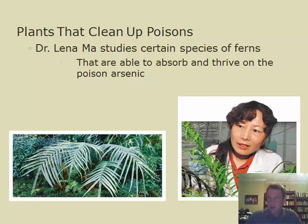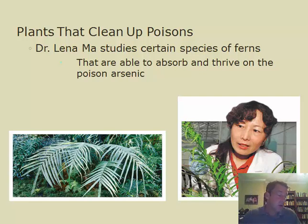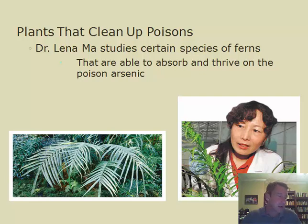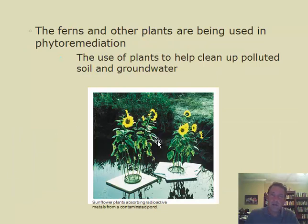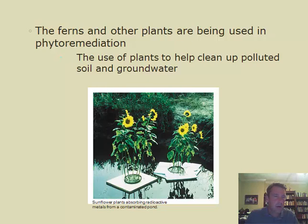The arsenic gets incorporated into the plant's tissues and then the plants can be disposed of properly. These ferns are an example. This process is called bioremediation — or specifically phytoremediation when plants are used. Biologists also use bacteria to clean up oil spills. Here's another example of sunflowers absorbing polluted water and filtering it to make it clean.